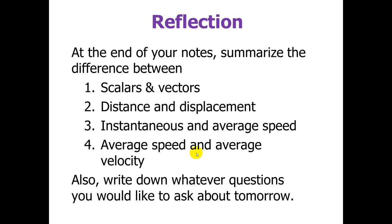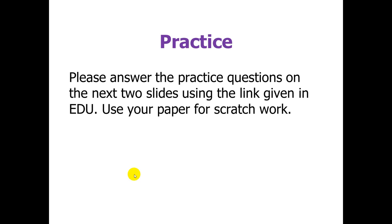So, at the end of your notes, I would like you to summarize the difference between scalars and vectors, distance and displacement, instantaneous and average speed, and average speed and average velocity. You should write one sentence that explains the difference between those four. And also, take the time to write down whatever questions you would like to ask about in class tomorrow. And, there are two practice questions in the next slides. Please answer the practice questions on the next two slides using the link given in EDU. Use your paper in front of you for scratch work, but you will put your answers in the link. It will take you to a Google form.